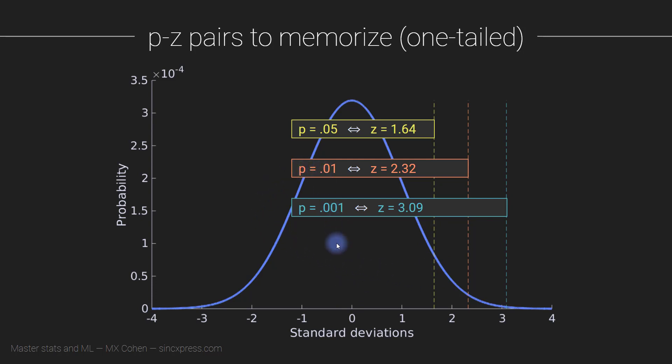Conversely, if we go for a p-value threshold of 0.01, then we say that our observed test statistic must be more than 2.32 standard deviations away from the mean of the null hypothesis distribution in order for us to consider that effect to be statistically significant at a p-value threshold of 0.01. And then 0.001 is a z-value of 3.09.